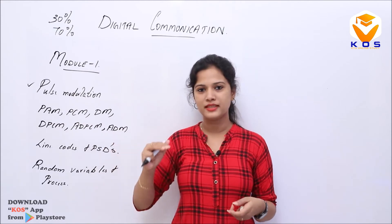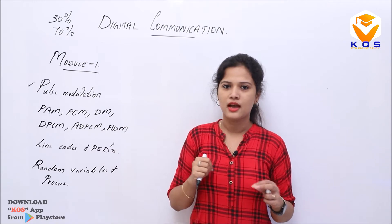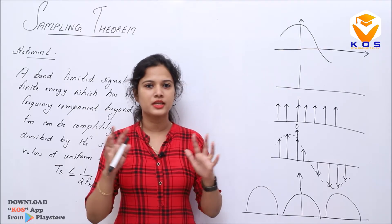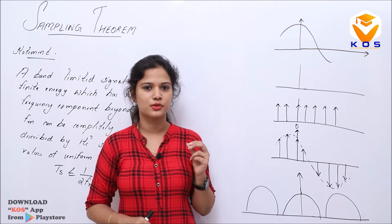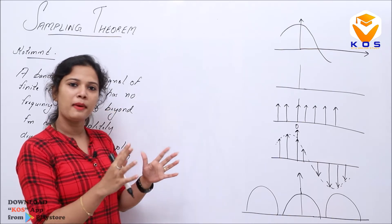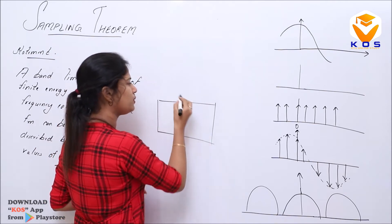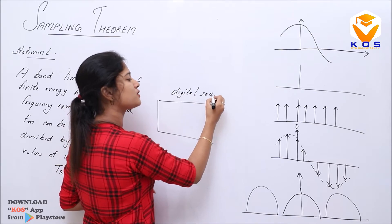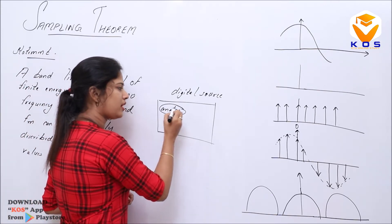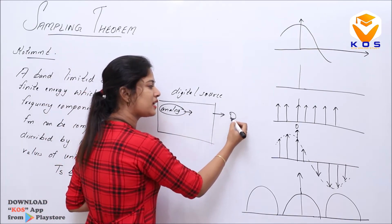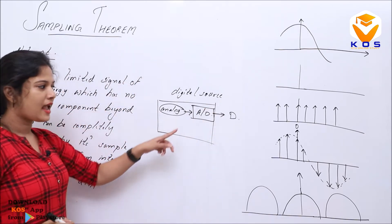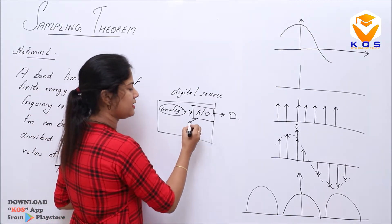Now we will begin with pulse modulation — the basic principle of digital communication. When we look at the overview of digital communication, we have an information source. This will be a binary sequence or digital source. When the data is analog data, it needs to be converted using an analog-to-digital converter.